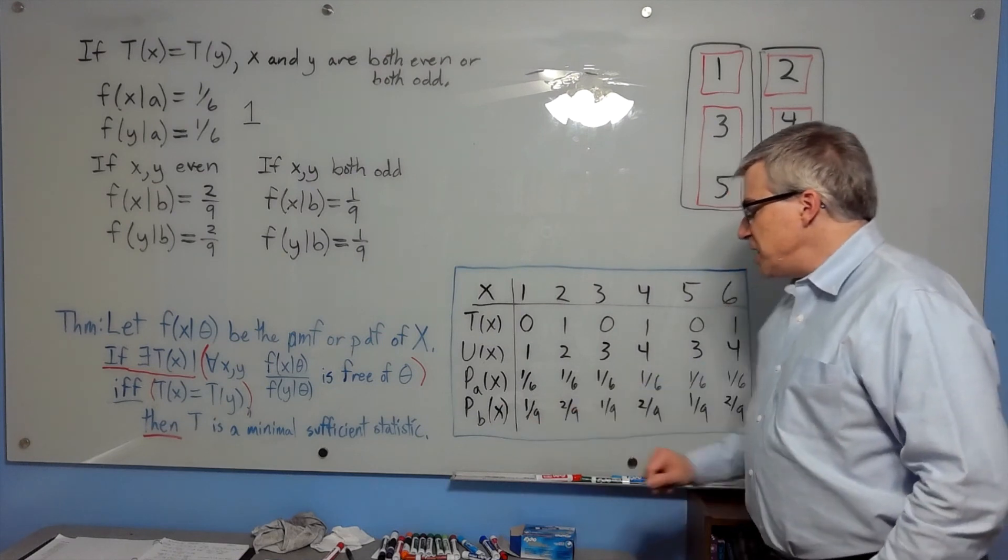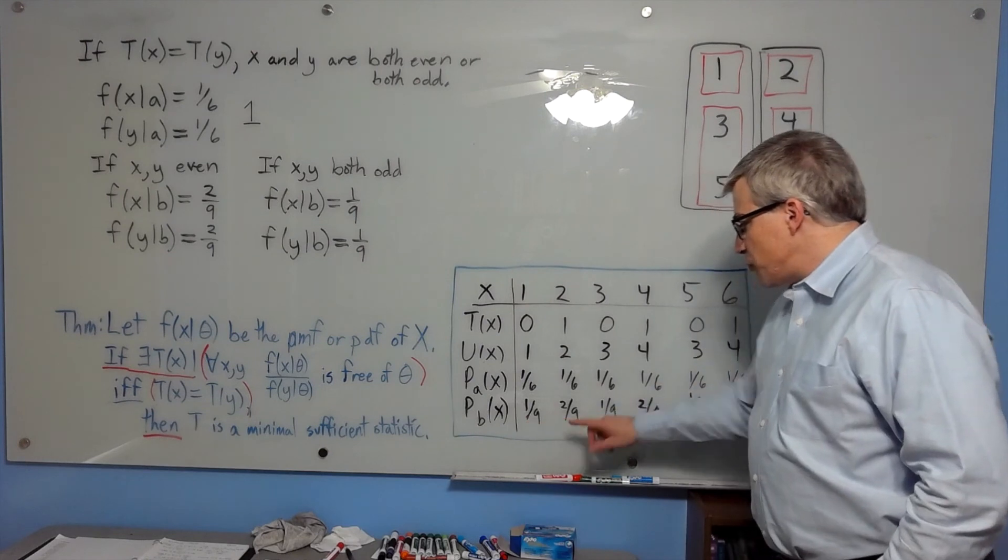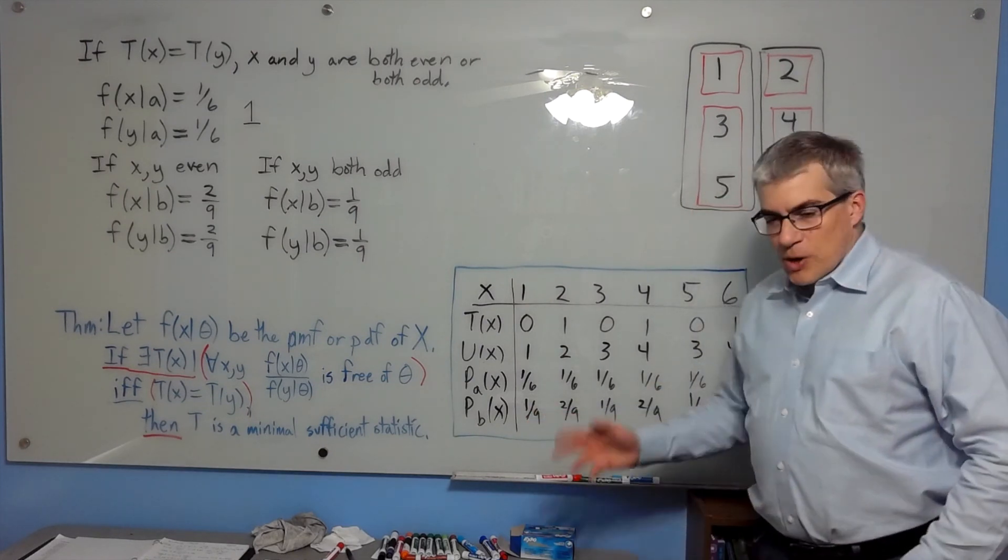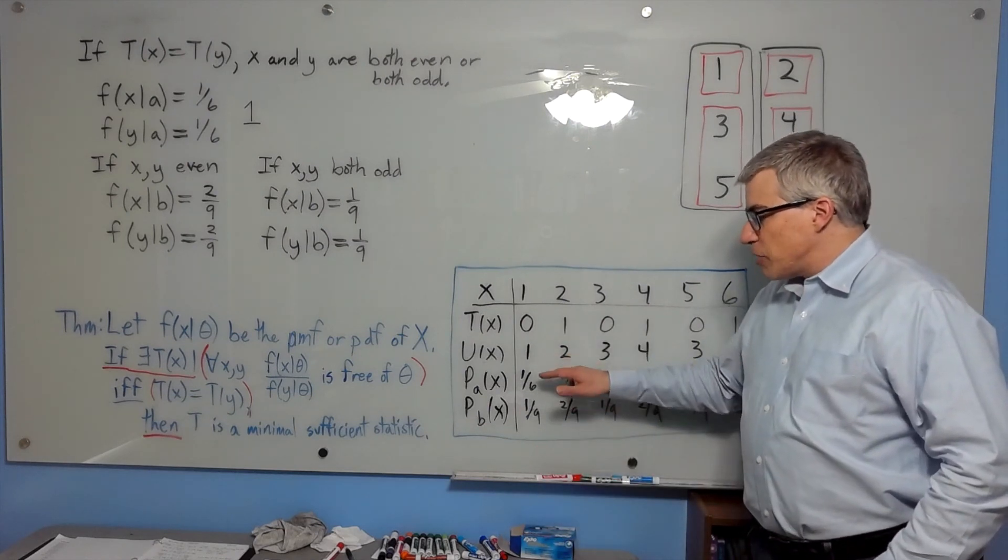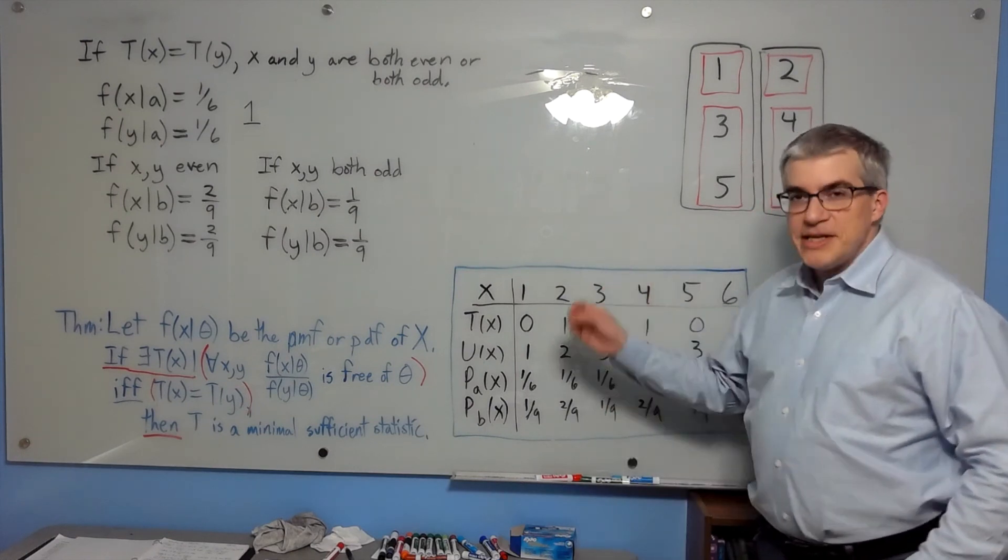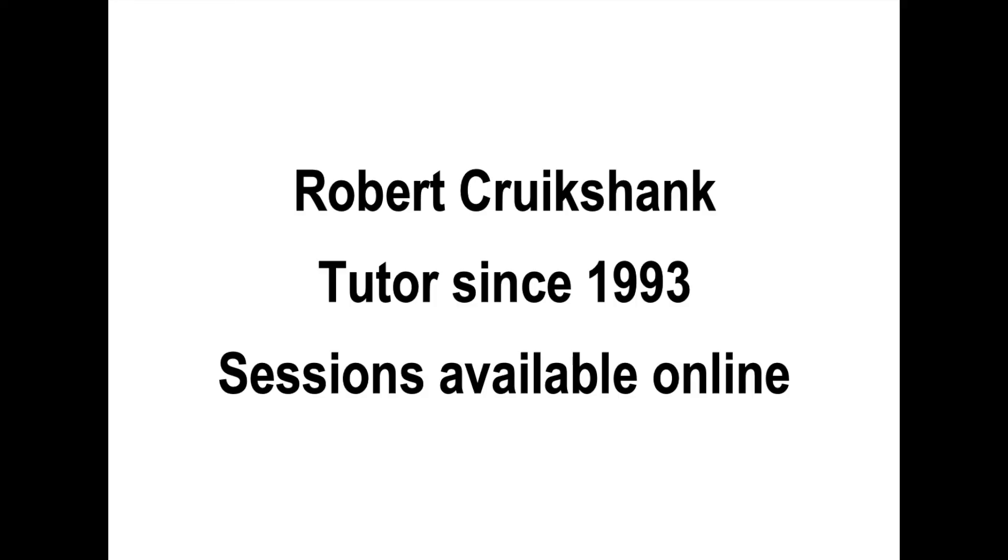But in the b case, we're talking about 1 even 1 odd. That means we're either going to get one-ninth over two-ninths or two-ninths over one-ninth. So we're either going to get one-half or 2. And so it depends on whether it's a or b, so it is not free of theta. Therefore, t, finally, is the minimal sufficient statistic. Well, there. Thank you.